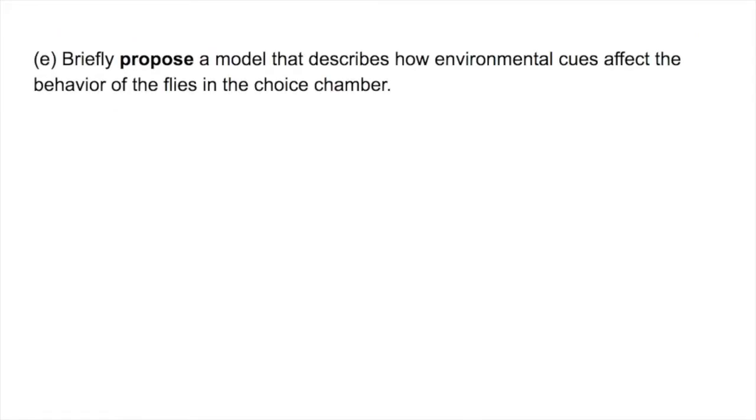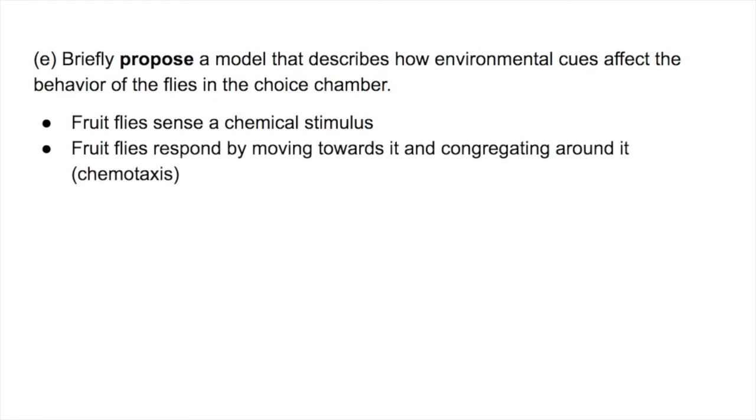Part E, briefly propose a model that describes how environmental cues affect the behavior of flies in the choice chamber. This question is kind of vague, but essentially what it's asking is what causes the flies to do what they did. The fruit flies sense the chemical stimulus and they respond to that stimulus by moving toward it and congregating around it. And this is called chemotaxis.